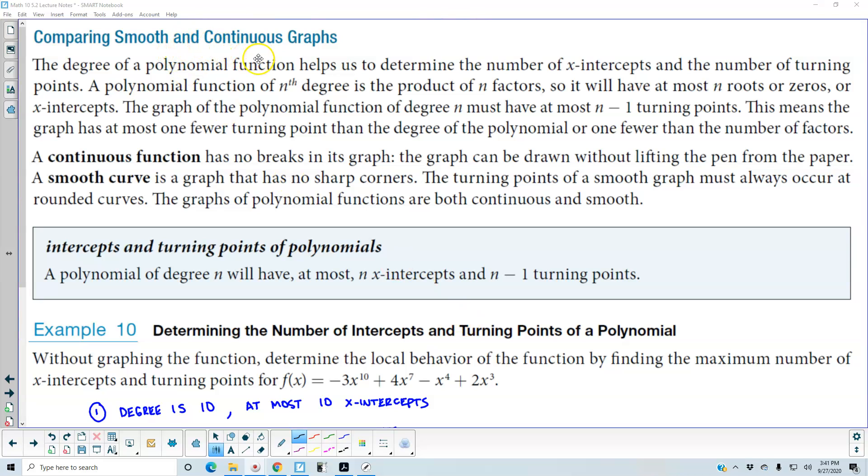Comparing smooth and continuous graphs, the degree of a polynomial function helps us to determine the number of x-intercepts and the number of turning points. A polynomial function of nth degree is the product of n factors, so it will have at most n roots or zeros or x-intercepts.